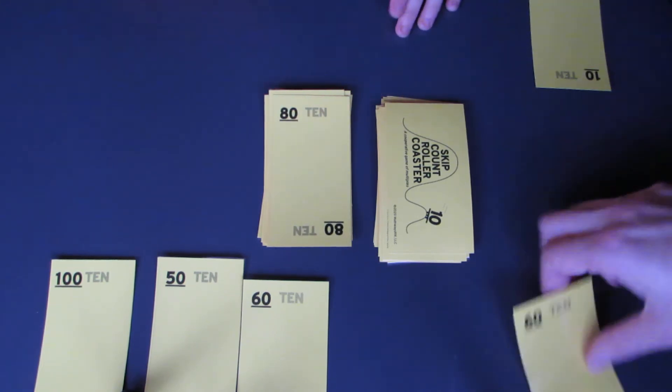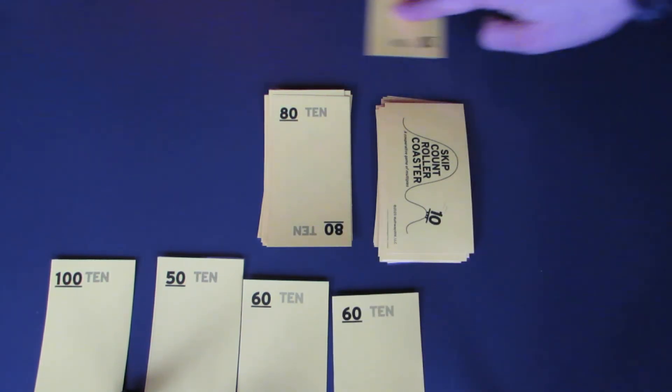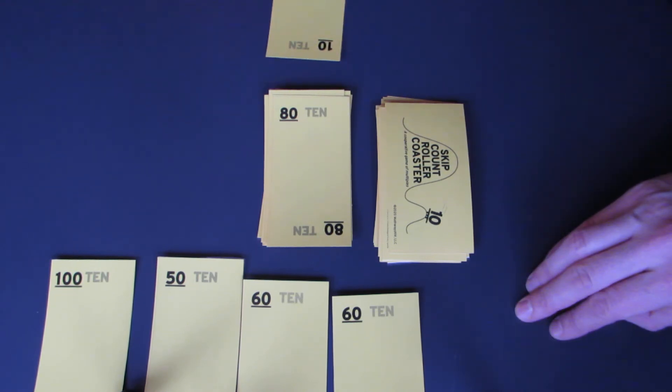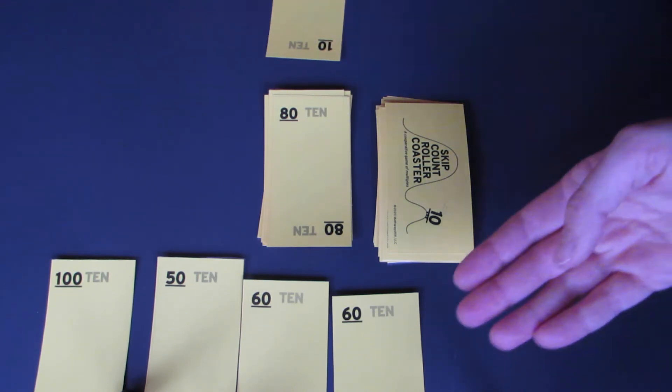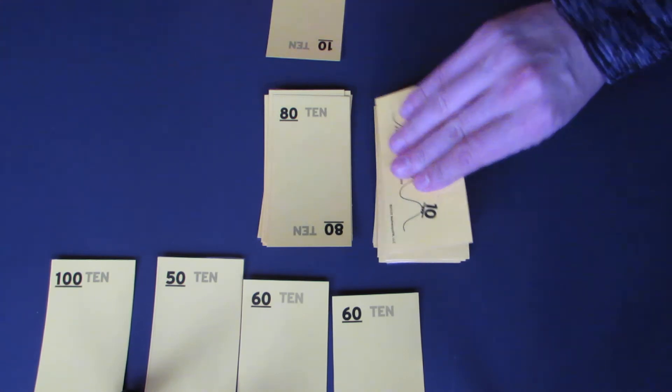So we're looking for a 70 or a 90. Do we have a 70 or a 90? No. We're stuck. So now, when we get stuck, we turn a card over.